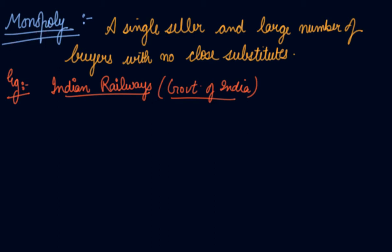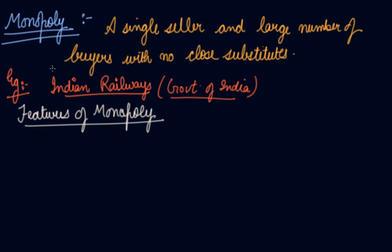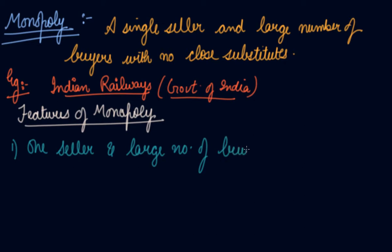Let's understand the features of monopoly. Feature number one — which you can find from the definition itself — is one seller and a large number of buyers. Under monopoly there is a single producer of a commodity. He may be alone, or there may be a group of partners, a joint stock company, or a state.